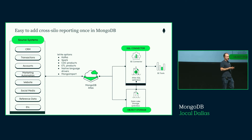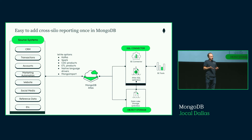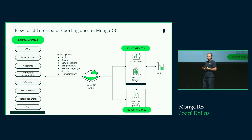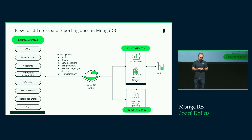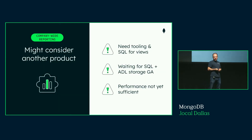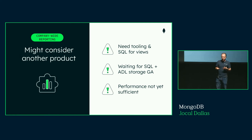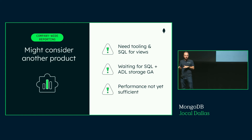Once all the data is in MongoDB as a master data hub, many people want to use it for company-wide reporting — you've already put work into the data quality, so why not leverage it for cross-company BI? You have the BI Connector and Atlas SQL. It's a great benefit that once you get the master data into MongoDB, you can leverage it for real-time analytics. Where you might consider another product: for company-wide reporting, SQL becomes even more necessary, so consider whether you need to create views in SQL. You could put them in your BI tools or at the MongoDB query language level.